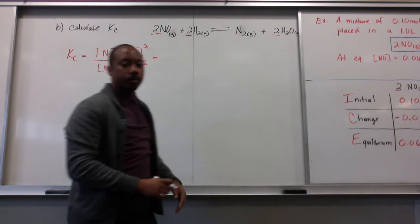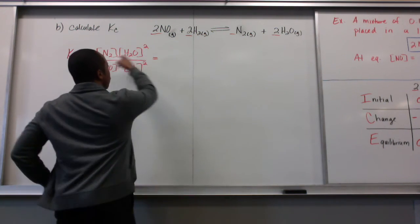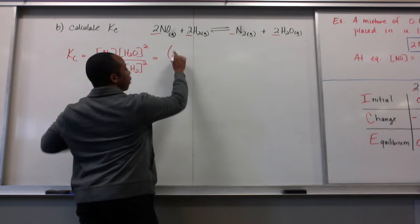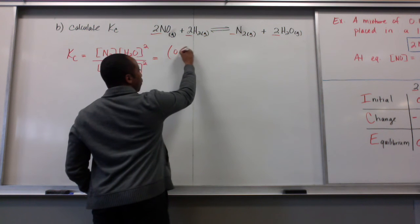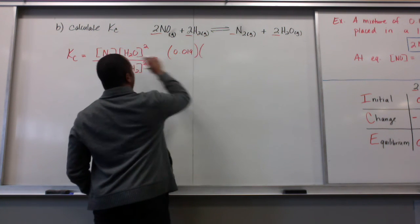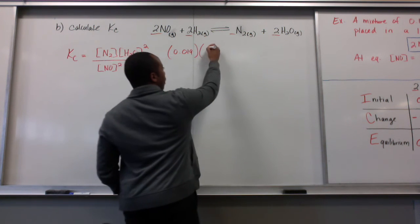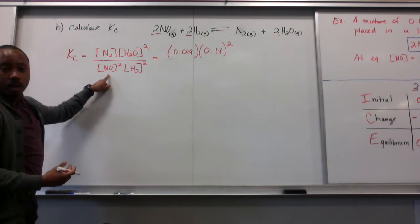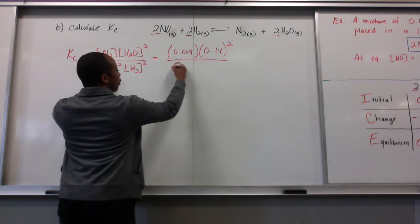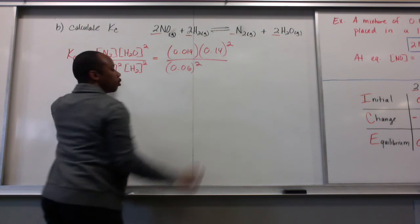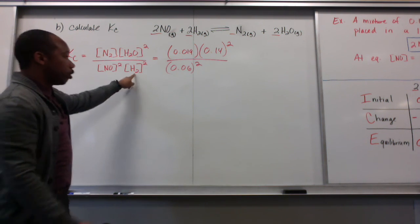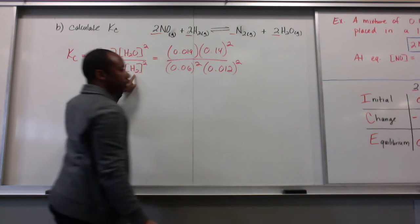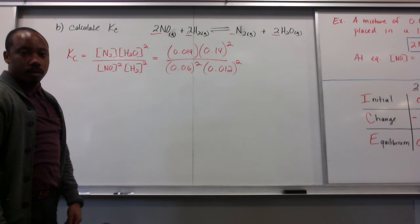The concentration of N2, this is at equilibrium because this is an equilibrium expression. Concentration of N2 was 0.019. Concentration of H2O is 0.14 and that's squared. The concentration of NO is 0.06 and that is squared. And lastly, the concentration of H2 is 0.012 and that is squared.